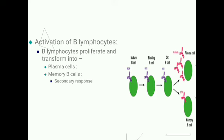The second form of B lymphocytes are memory B cells. A small portion of activated B lymphocytes are transformed into memory B cells. These are small-sized cells that occupy lymphoid tissue and remain in the body throughout life. On second and subsequent exposure to the same antigen, they cause rapid and more potent antibody production — the secondary response.